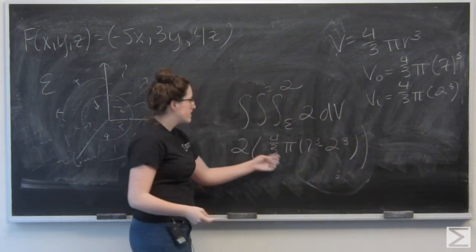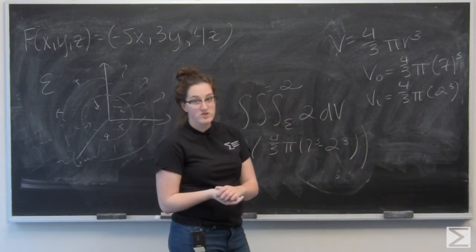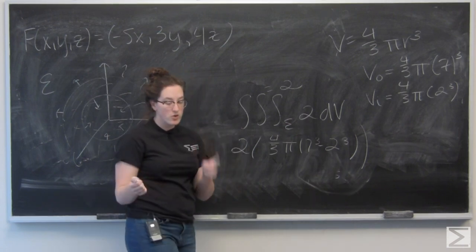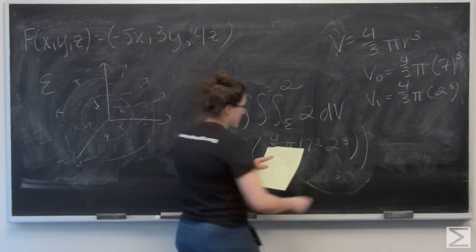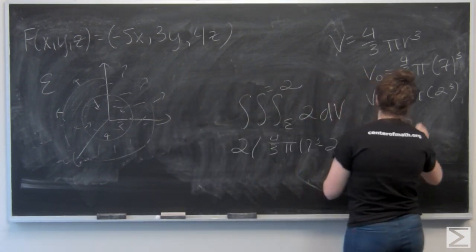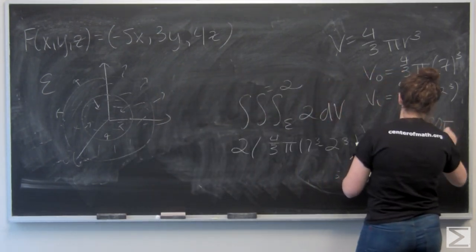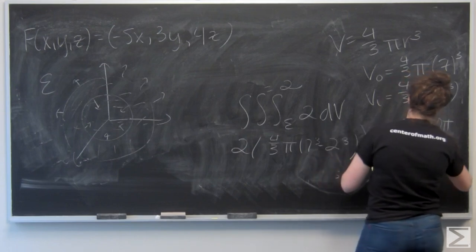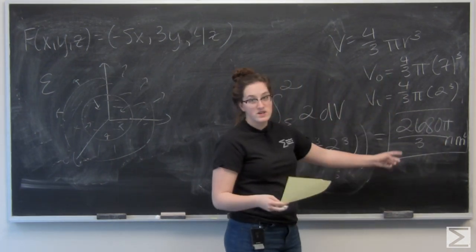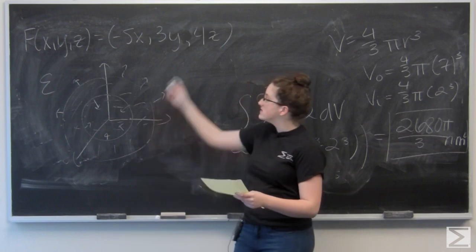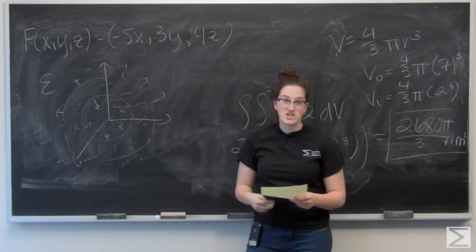Just like 2 times 4 thirds pi times quantity 7 cubed minus 2 cubed, which I don't know off the top of my head, you can put in your calculator, I did a little bit earlier, and I got 2,680 pi over 3 newton meter squared. So that's the flux of this given vector field F through our region E.